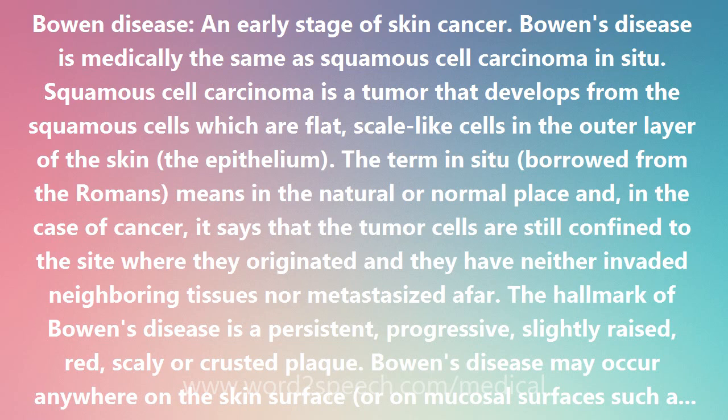Under the microscope, atypical squamous cells are seen to have proliferated through the whole thickness of the epidermis — the outer layer of the skin — but to have gone no farther. The cause of Bowen's disease classically was prolonged exposure to arsenic. Today, Bowen's disease occurs most often in the sun-exposed areas of the skin in older white males.